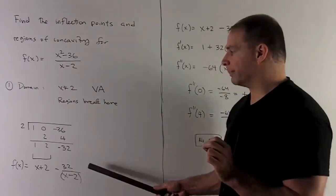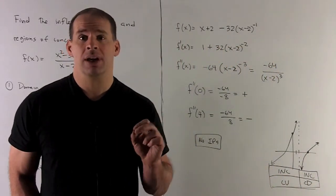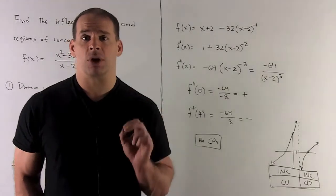I'm going to get x + 2 - 32/(x - 2). So that's my function. I'll rewrite that as x + 2 - 32(x - 2)^(-1).